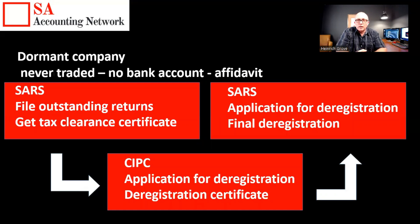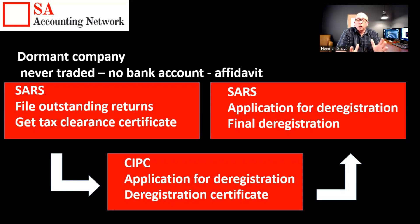Let me explain the dormant company situation. Let's say you opened a business 10 or 20 years ago and registered the company with CIPC — back then it was called CIPRO. As soon as you registered that company, that information was sent through to the receiver of revenue and the company automatically got a tax number. In the past, if you never traded, CIPC said that if you don't file your annual returns for a couple of years, the company would automatically deregister. The same assumption was that if you just left it, it would eventually disappear into the abyss. Unfortunately, around 2019 there was a change in the legislation.